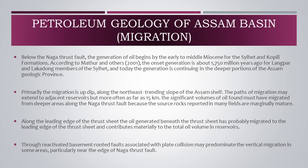Next, let's study about migration. Below the Naga thrust fault, the generation of oil begins in the early to middle Miocene for the Silet and Kopili formations. The onset of generation is about 1,700 million years ago for the Langpur and Lakadung members of the Silet, and today generation is continuing in the deeper portions of the Assam Geologic Province. Primarily the migration is up-dip, along the northeast trending slope of the Assam shelf. The paths of migration may extend to adjacent reservoirs but more often as far as 15 km. The significant volumes of oil found must have migrated from deeper areas along the Naga thrust fault because the source rocks reported in many fields are marginally mature. Along the leading edge of the thrust sheet, oil generated beneath the thrust sheet has probably migrated to the leading edge and contributes materially to the total oil volume in reservoirs. Reactivated basement-rooted faults associated with plate collision may predominate vertical migration in some areas, particularly near the edge of the Naga thrust fault.